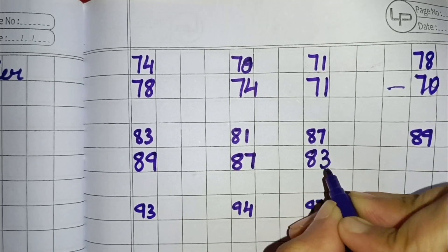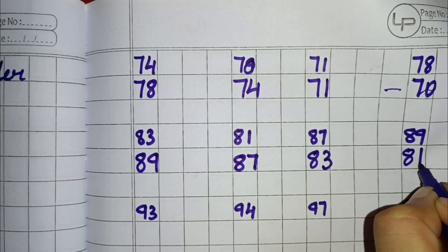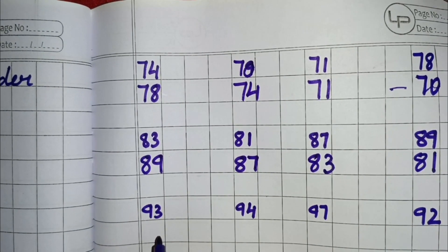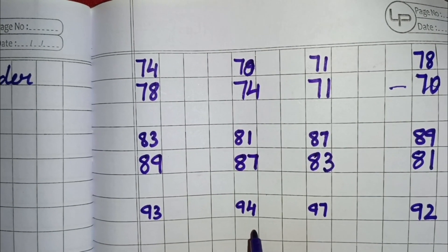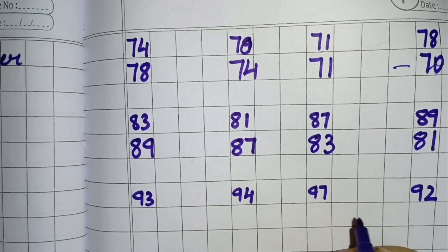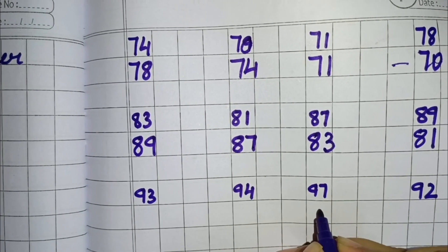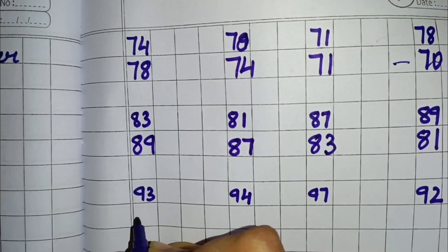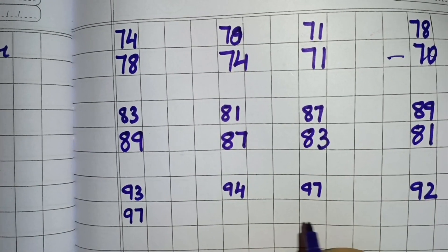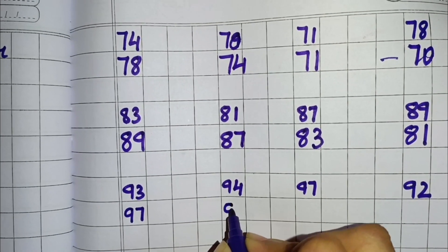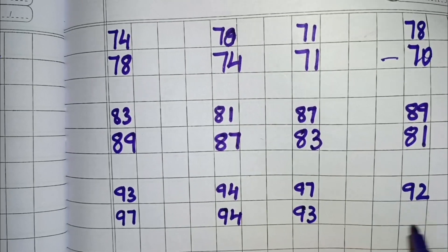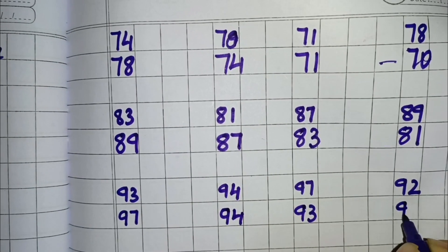Now next we have 93, 94, 97 and 92. So you all can see that 97 is the biggest, so we will write here 97. Then we will write here 94. Then we will write 93 and then 92.